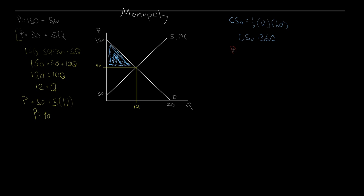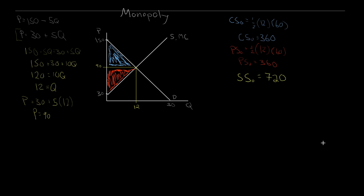Similarly, producer surplus is above the supply curve, below the price accepted, out to the quantity of 12. That's another triangle: one-half base of 12, height of 90 minus 30, which is also 60 — giving us a producer surplus of 360. In this case, we have consumers and producers and nothing else, so our social surplus is just consumer plus producer: 360 plus 360 equals a social surplus of 720.